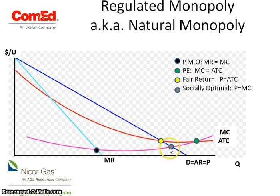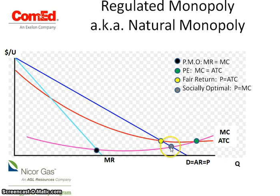The problem with the socially optimal price is that per unit, costs are higher than what the company is charging. As a result, the government has to subsidize the producer because they're at a loss at this output. The tradeoff is that the government has to subsidize — and let's be honest, they subsidize through taxing us — so in the end we're actually paying a higher price for it.